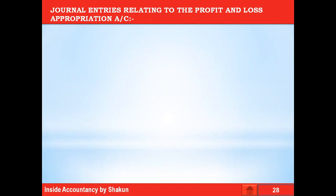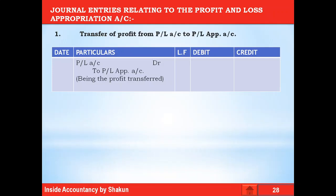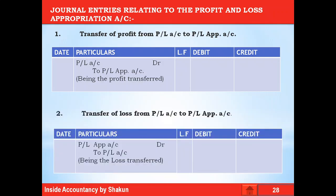Now let's talk about the journal entries relating to the profit and loss appropriation account. The first entry is regarding the transfer of profit from the profit and loss account to the profit and loss appropriation account. The profit appears as a balancing figure on the debit side of the profit and loss account, and from the debit side it is transferred to the credit side of the P&L appropriation account. Therefore, the journal entry is: Profit and Loss Account DR to P&L Appropriation Account. The next entry is for transfer of loss: since the loss appears on the credit side, P&L Appropriation Account is debited and P&L Account is credited — journal entry: P&L Appropriation Account DR to Profit and Loss Account.